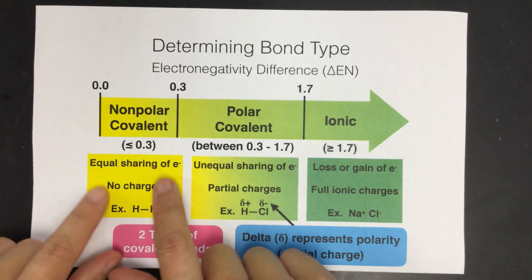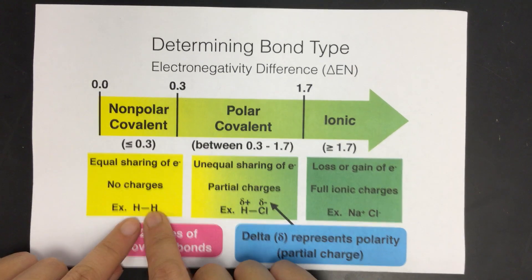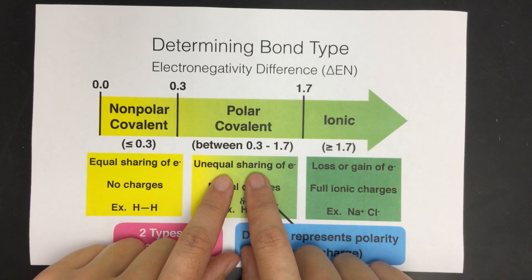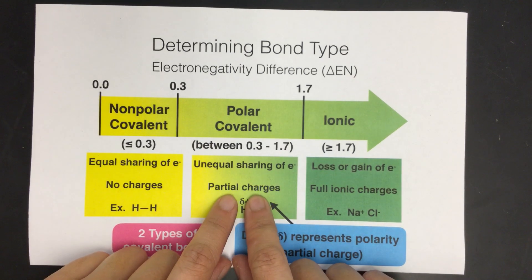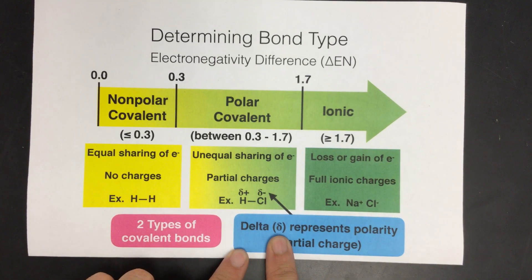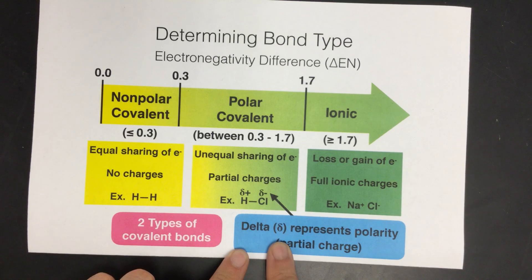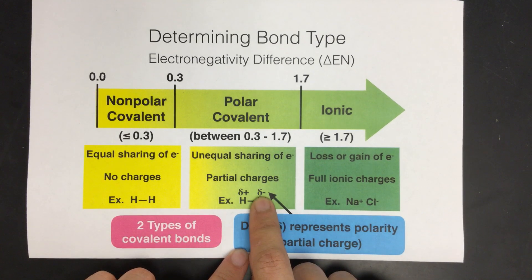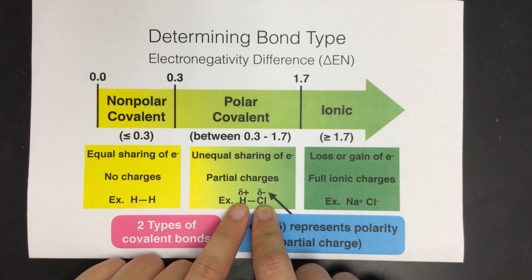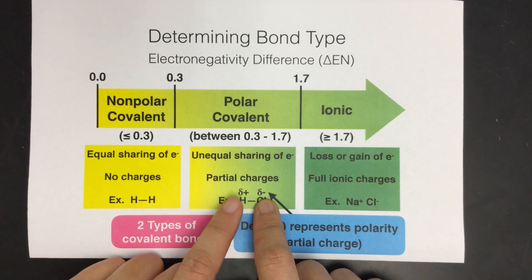Non-polar covalent is equal sharing of electrons — you have no charges because they're basically holding and sharing the electrons directly in between them. Polar covalent bond is sharing still, but it's unequal, where one atom is pulling the electrons more to their side. We use the delta sign to represent a partial charge and the polarity — delta minus means the more electronegative atom is slightly more negative, and the other atom is slightly positive.